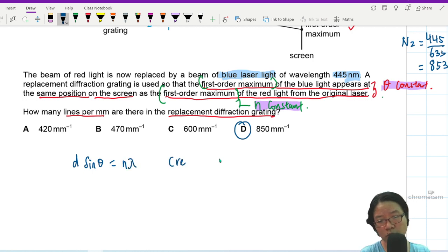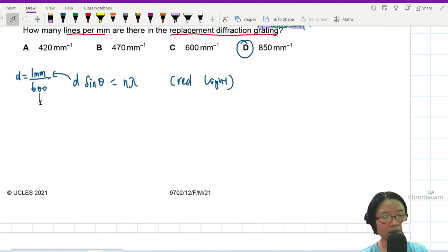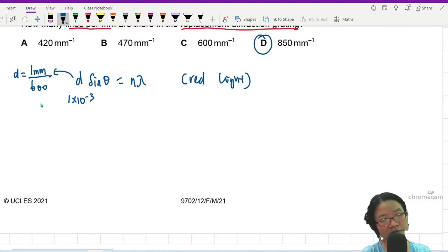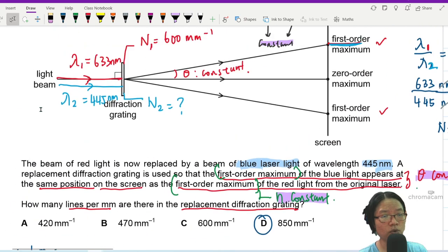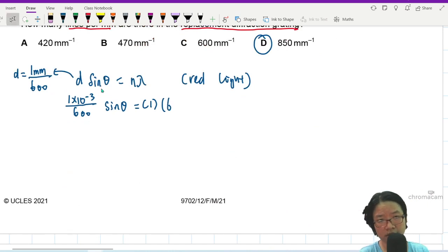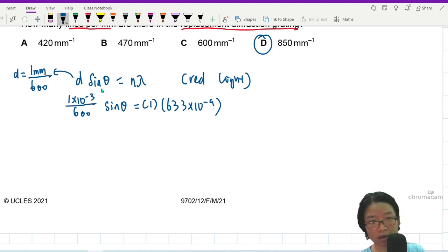Let's say you want to find value of theta. D sine theta is N lambda. And I'm going to use red light because red light is the one where I have all the information from. So this D will be 1 over, 1 mm can fit 600 lines, 600 lines per mm. So here I will take 1 times 10 to the power of negative 3 over 600. We need to convert. Why? Because we are looking for sine theta. And sine theta has to be, all the units have to cancel out.